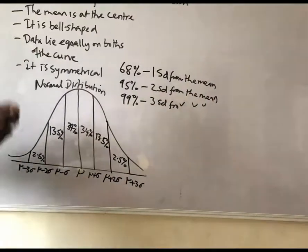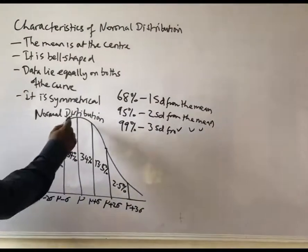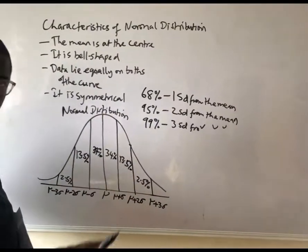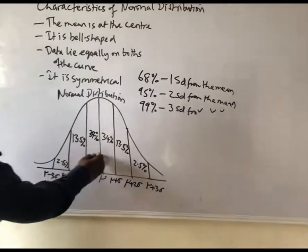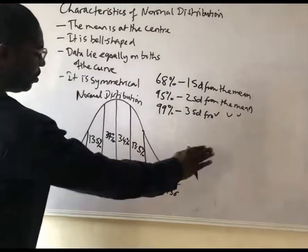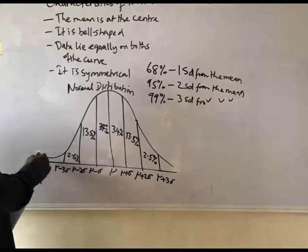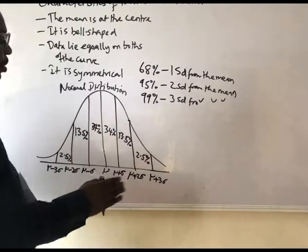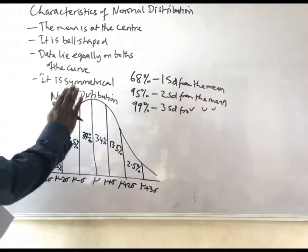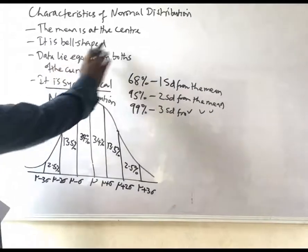The mean is at the center of our distribution — that's the most popular value across the distribution. On either side of the mean, we have 50%. This makes a mirror representation: we have 50% on the right and 50% on the left of a normal distribution. That's why we say it is symmetrical, and the data lie equally on both sides.